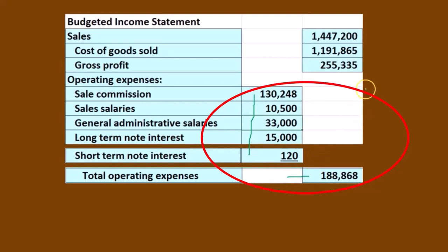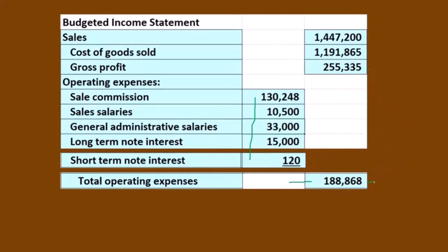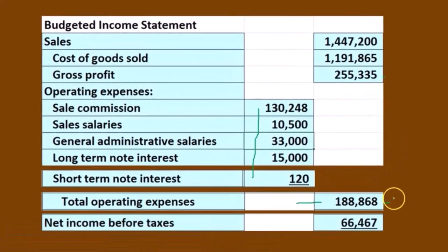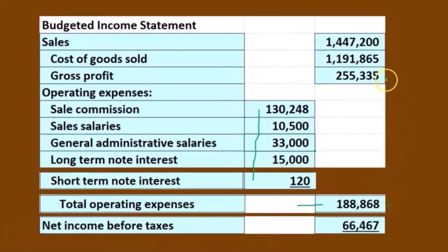Now we have the gross profit and the operating expenses. We're going to subtract those two out just as we normally would. $255,335 minus $188,868 gives us $66,467 — that's income before taxes.